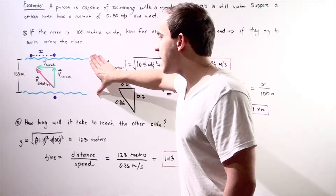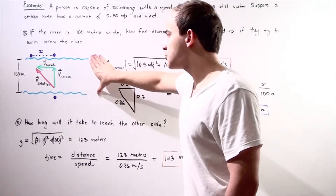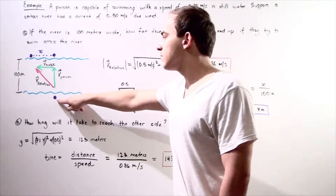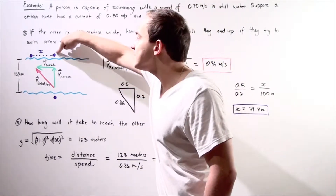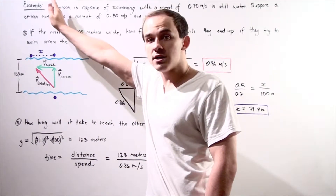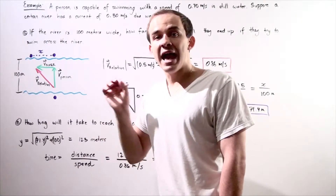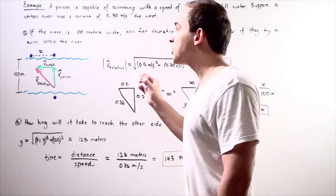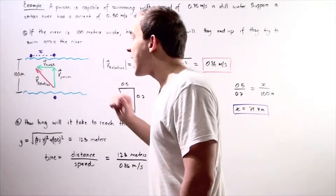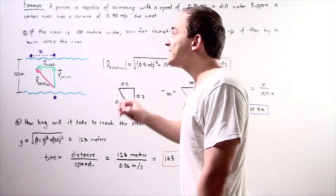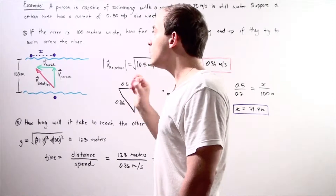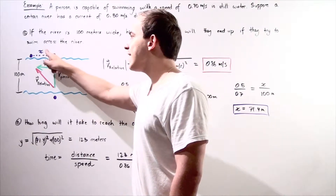Let's suppose we have our 100 meter wide river shown here. Our person begins on one side of the river and wants to end up at this side of the river. They attempt to swim directly across. What actually ends up happening is because the river has a current of 0.5 meters per second due west, our person actually ends up some distance X from where they want to end up. We want to find what this distance X is.